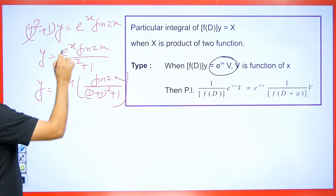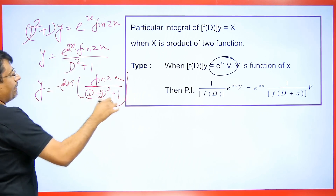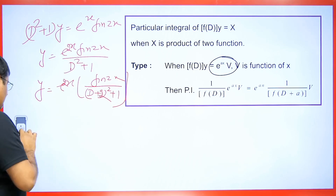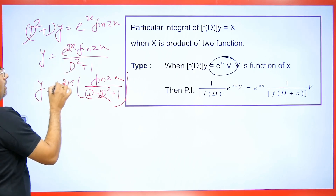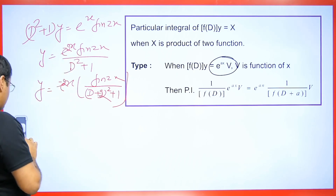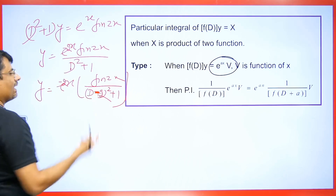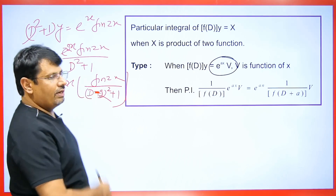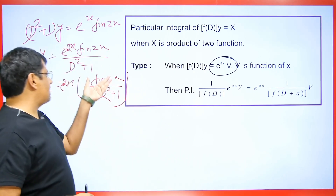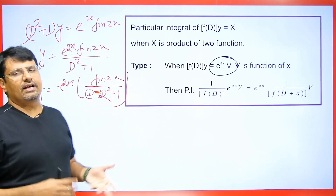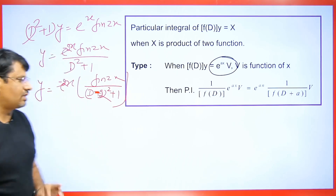If we had 2x in this case, we would substitute D with D plus 2 in the equation. Suppose we had minus 2x — no need to worry, this plus changes to minus. This is the rule. For the rest, we find the particular integral using the same method for sin.